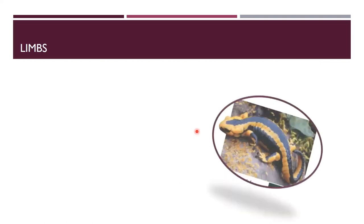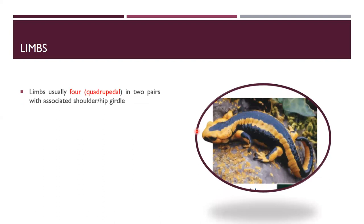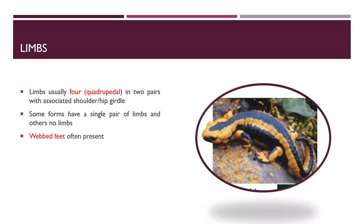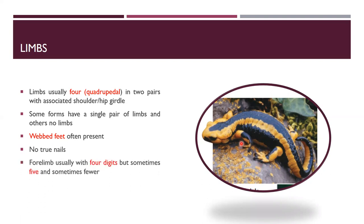Limbs are usually quadrupedal — they have four limbs arranged in two pairs — with shoulder and hip girdles present. Some forms have a single pair of limbs and others, like caecilians, have no limbs. Webbed feet are present. No true nails. The four limbs have four digits, though sometimes five or fewer than five digits are present.